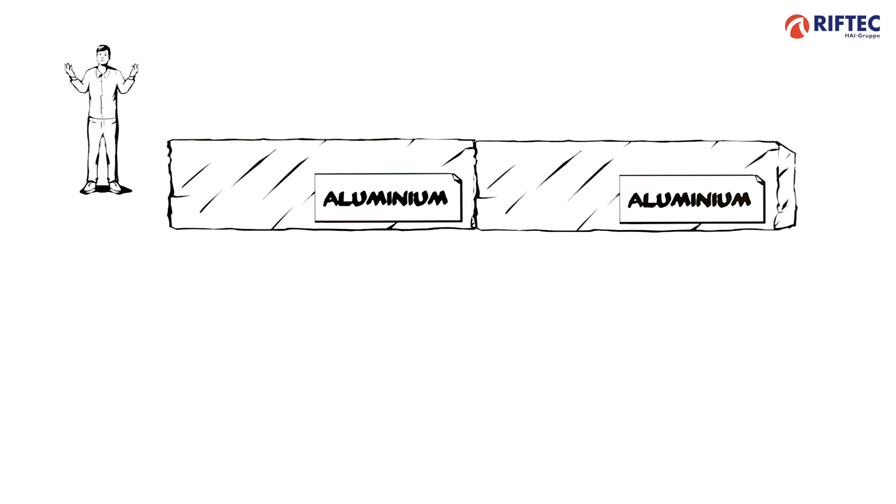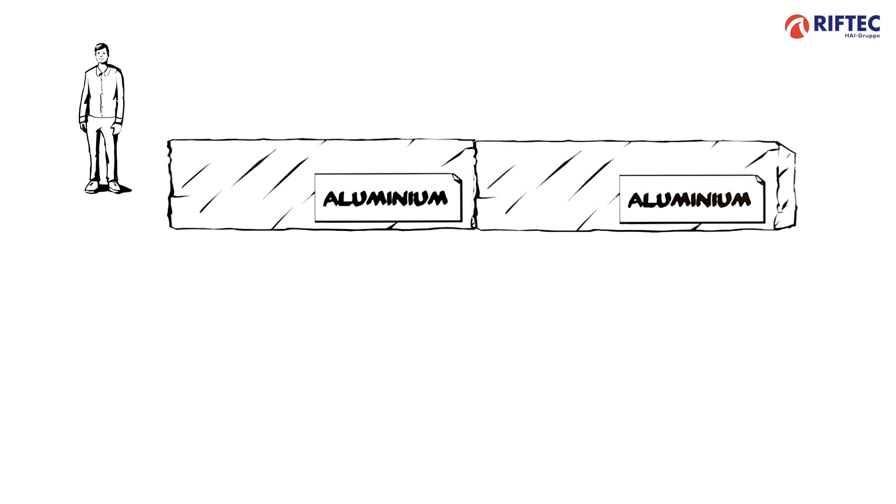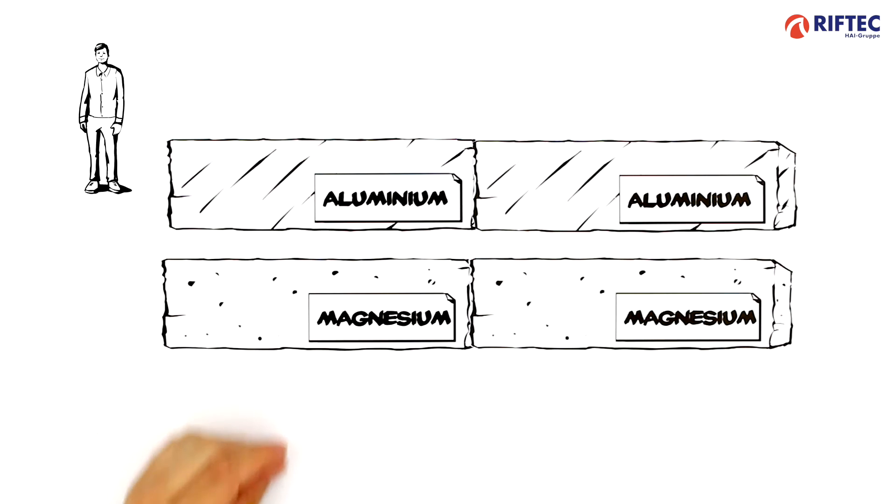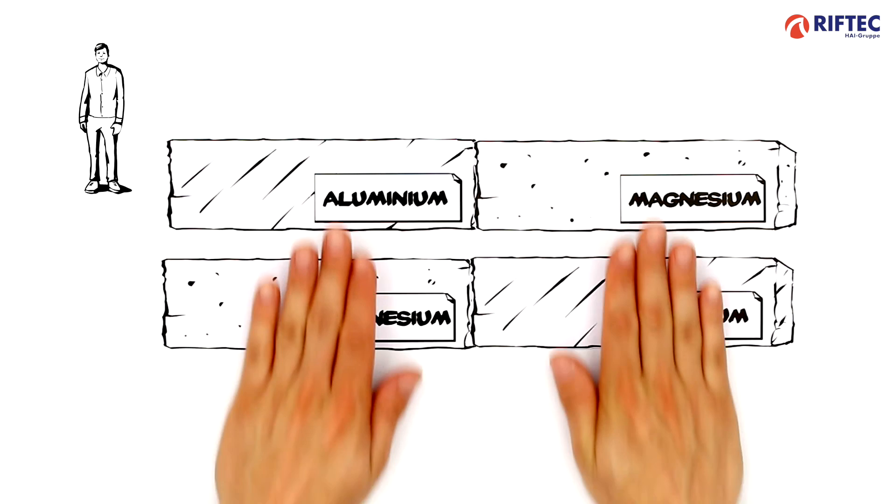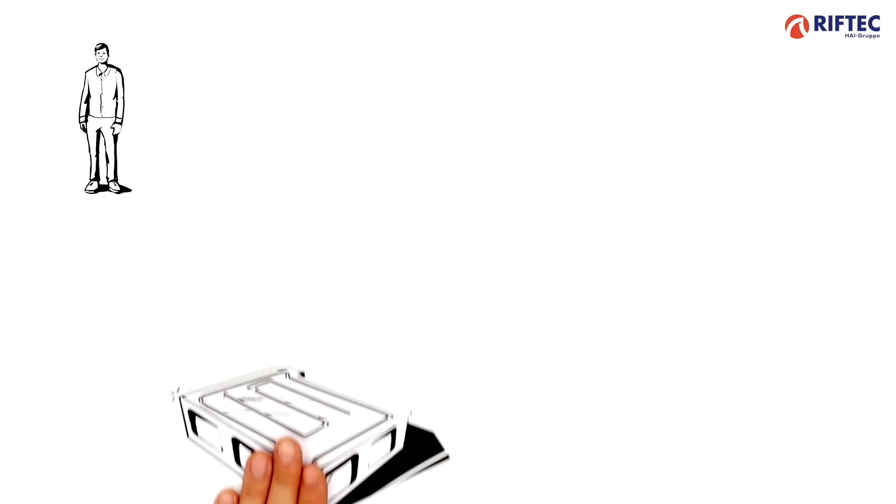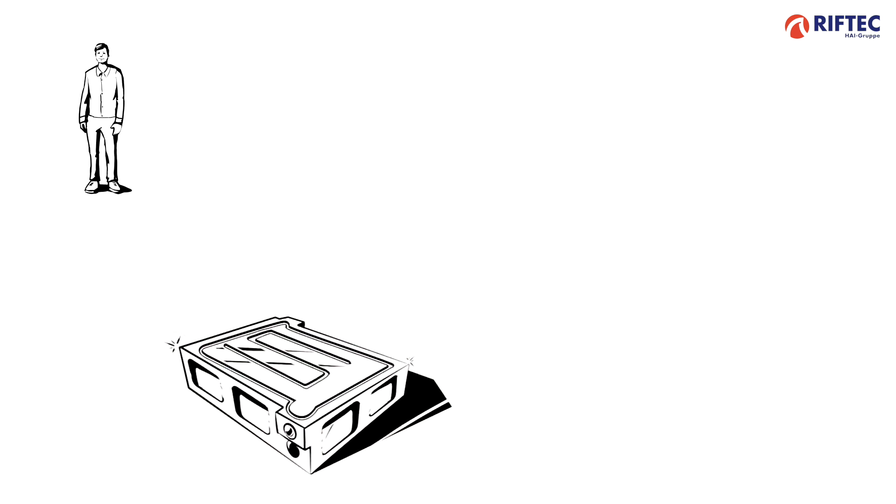And so what materials can you weld then? Well the process is particularly suitable for welding aluminium. But connections between other light metals and even mixed connections are possible. This means for example that aluminium sheets or profiles can be welded to cast aluminium elements or even to stainless steel.